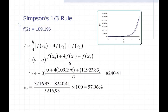Now let's look at Simpson's one-third rule. Here's our governing algorithm. We need to determine the value at x0, x1, and x2 — so at x equal to 0, 2, and 4. When we do that, we can see that the error is somewhat reduced, and we're moving a little closer to the true value. Plugging the values in, I get 8,240.41, so I've reduced the error to 57.96%.